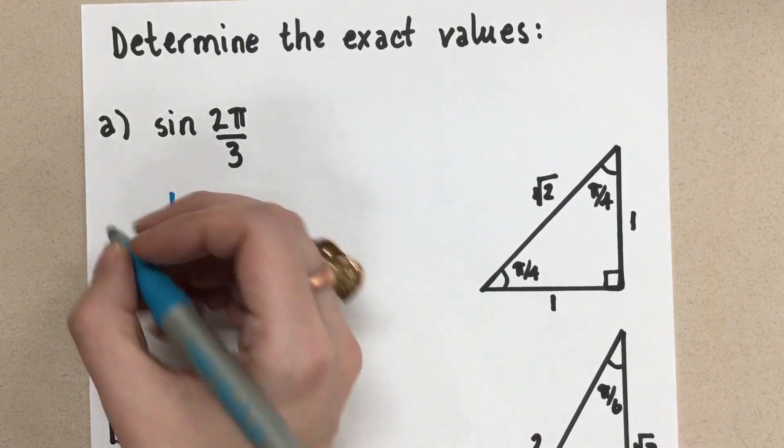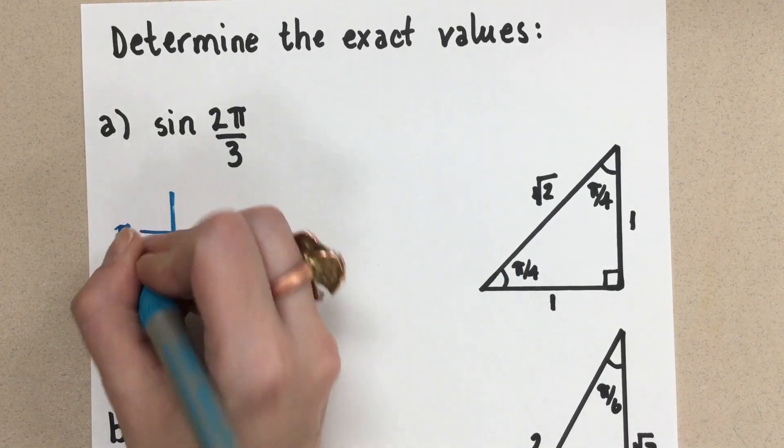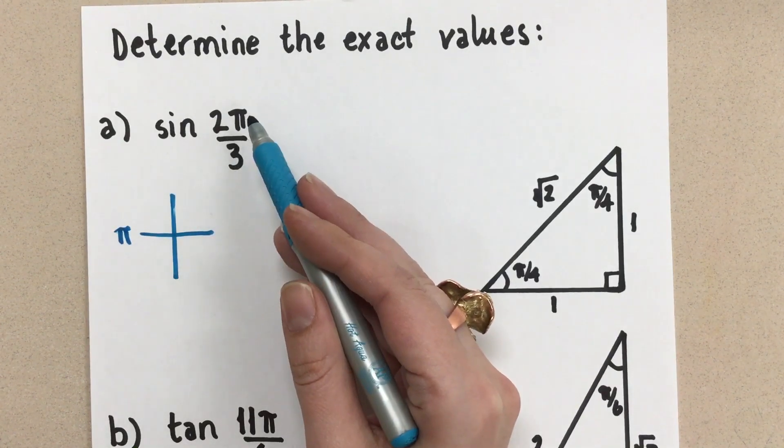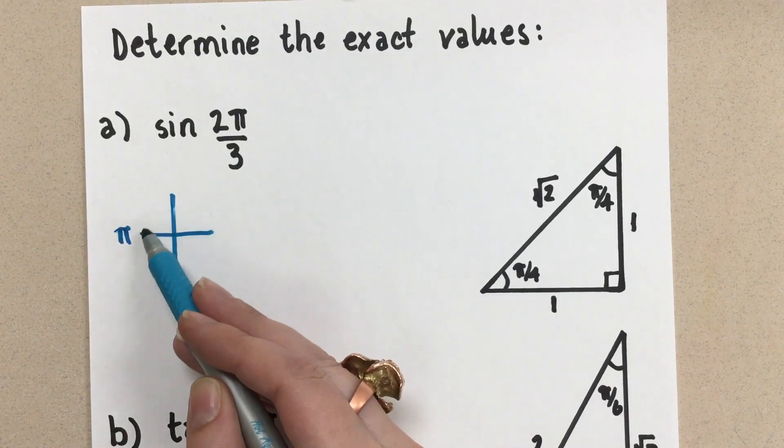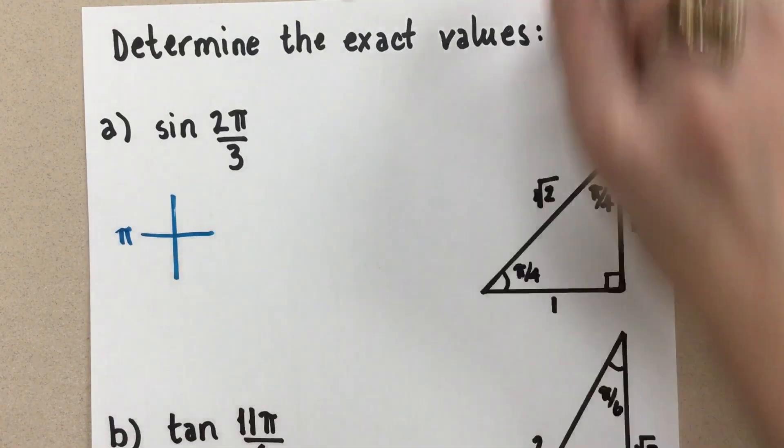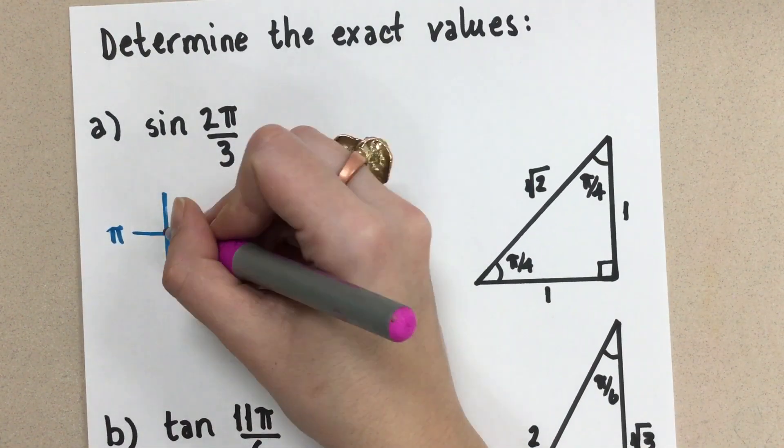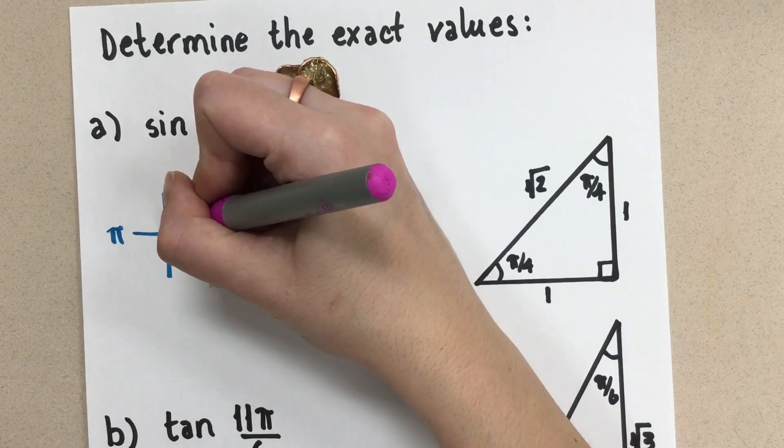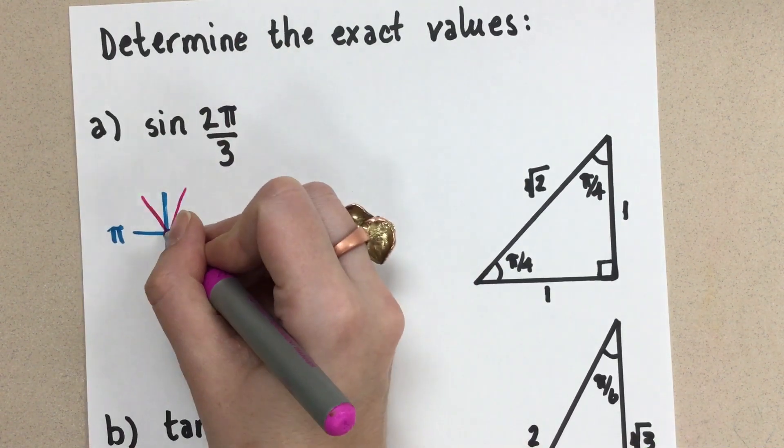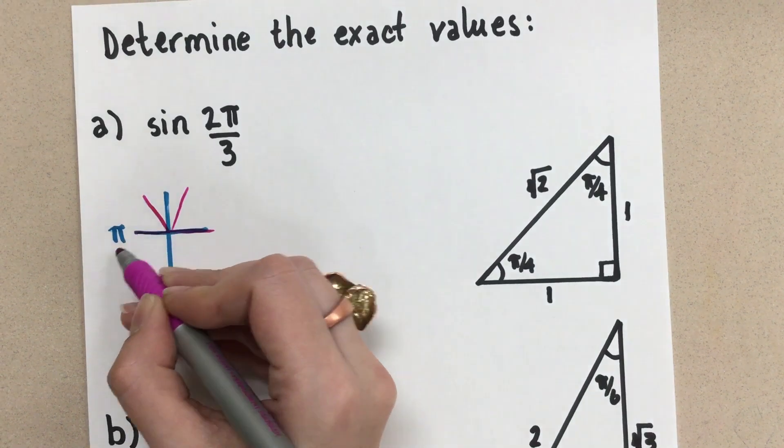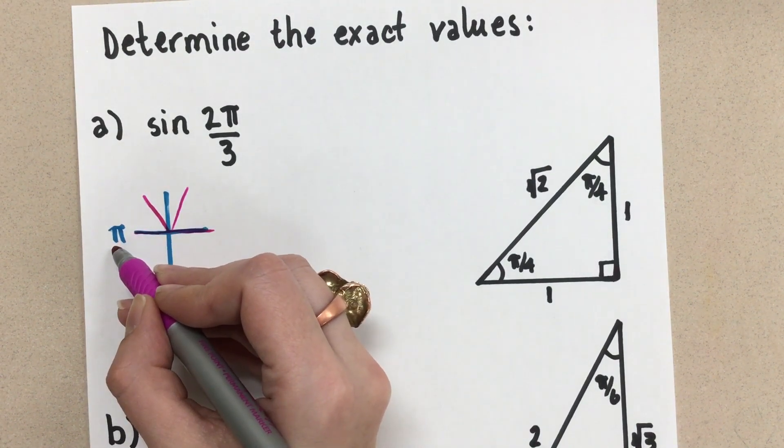Half of the circle is π radians. If we want 2 thirds of a π, then we're going to take the π radians and break it up into thirds. So if I start here and I break this up into thirds, it will look something like this. There's 1 third, 2 thirds, 3 thirds, which gives me the full π radians there.